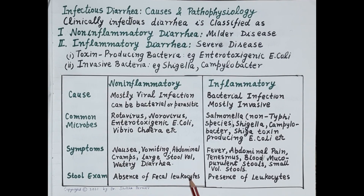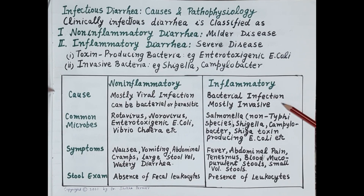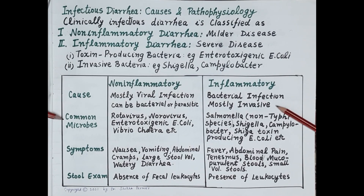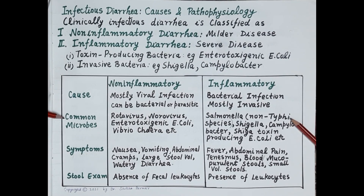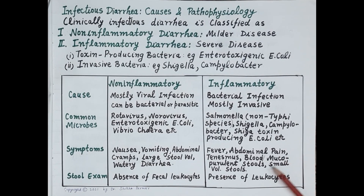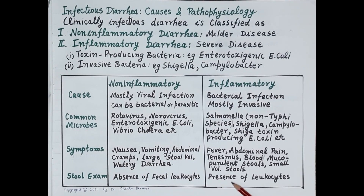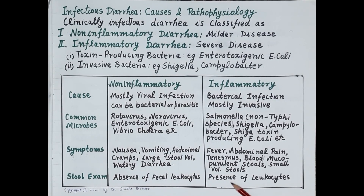Stool examination shows absence of fecal leukocytes since there is no inflammation of the colon. Inflammatory diarrhea, on the other hand, is mostly caused by invasive bacteria that invade intestinal cells and produce inflammation of the colon. Common microbes are Salmonella non-typhi species, Shigella, Campylobacter, and Shiga-toxin-producing E. coli. Symptoms include fever, abdominal pain, tenesmus (fecal urgency), bloody mucopurulent stools, small-volume stools, and presence of leukocytes in the stools.